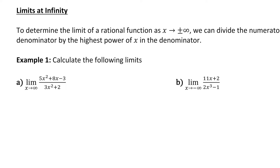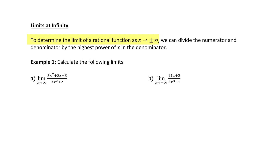Let's have a look at how to evaluate limits at infinity. To determine the limit of a rational function as x approaches plus or minus infinity, the main strategy we're going to use is to divide the numerator and denominator by the highest power of x that is in the denominator.